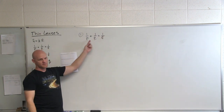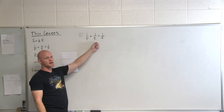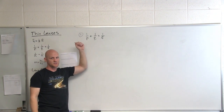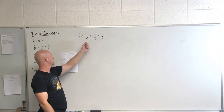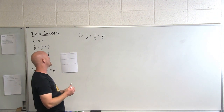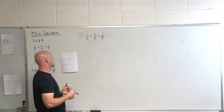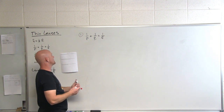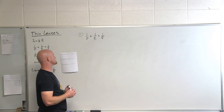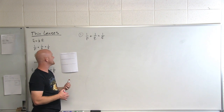Question number one — you'll find that the thin lens and mirror equation is kind of your go-to equation in this section. Question number one says: if an object is placed 12 centimeters in front of a concave mirror and the focal distance is given as 4 centimeters, what will be the magnification of the image? Is it real or virtual, upright or inverted?